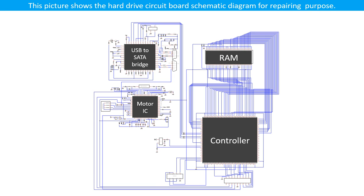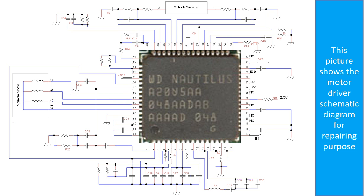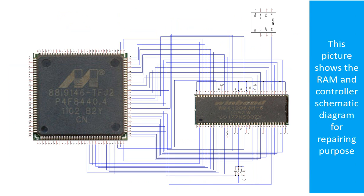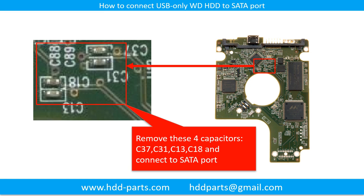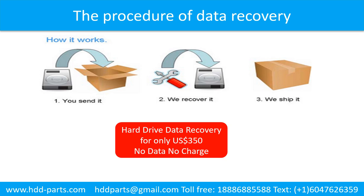This picture shows the hard drive circuit board schematic diagram for repairing purposes. This picture shows how to connect a USB-only WD hard drive to the setup port — a useful trick when the USB chip is broken or you want to bypass the USB controller chip to control the hard drive through the setup port directly. This picture shows the procedure for how we do data recovery for clients: the client sends their hard drive to us, we do data recovery, then we ship back the data to the client.